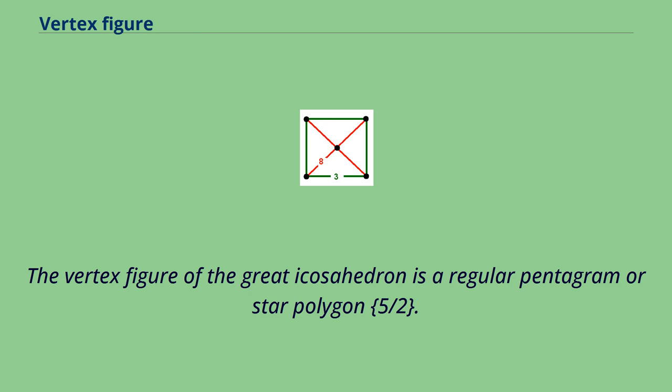The vertex figure of the great icosahedron is a regular pentagram or star polygon {5/2}.